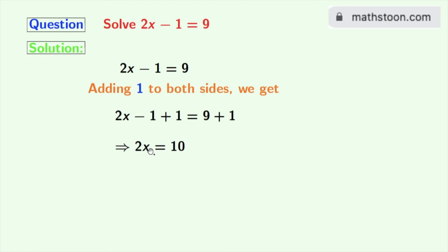Now to get the value of x, we need to divide both sides by 2. By doing so, we get 2x divided by 2 is equal to 10 divided by 2.